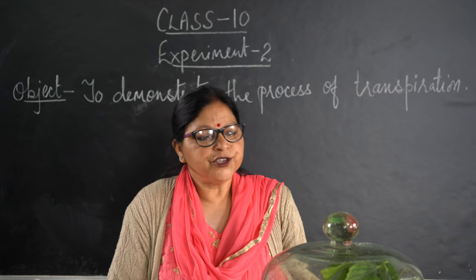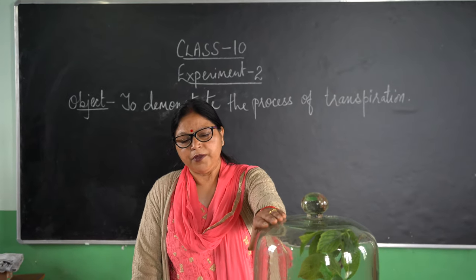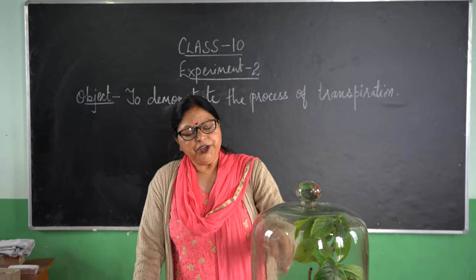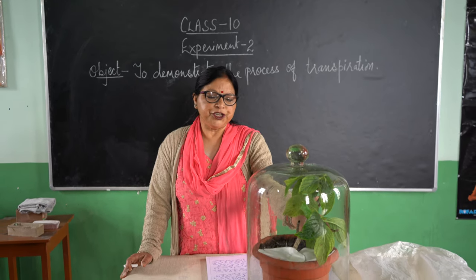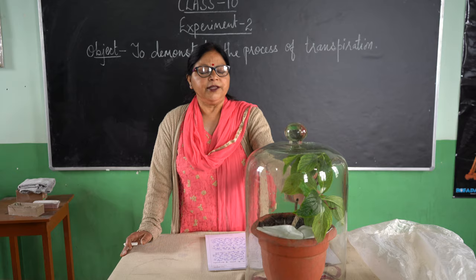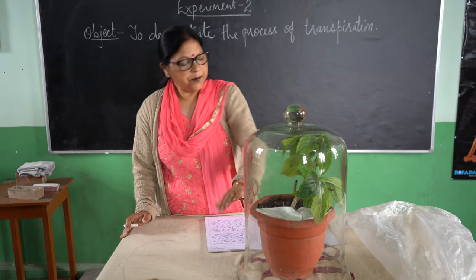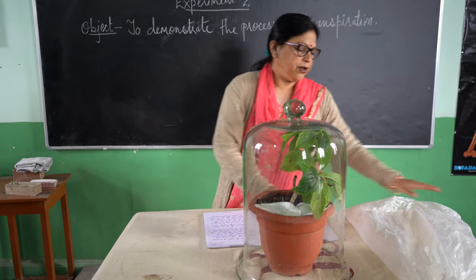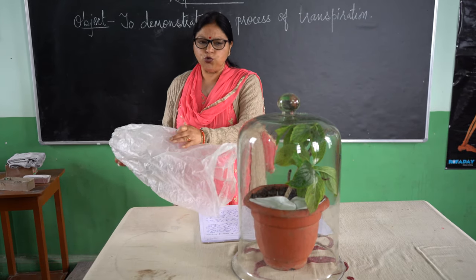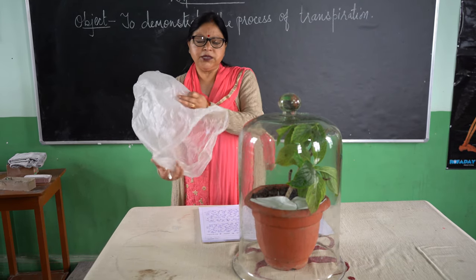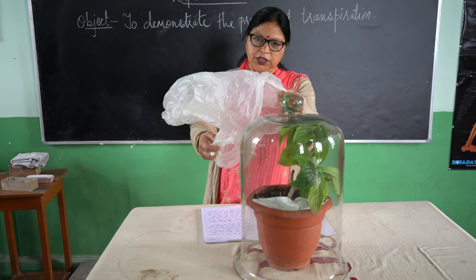We are demonstrating the process of transpiration using a bell jar. We take a potted plant which has been watered sufficiently before, and then we cover it with a bell jar. In place of the bell jar, a polythene cover can also be used — this potted plant can be covered with polythene as well.